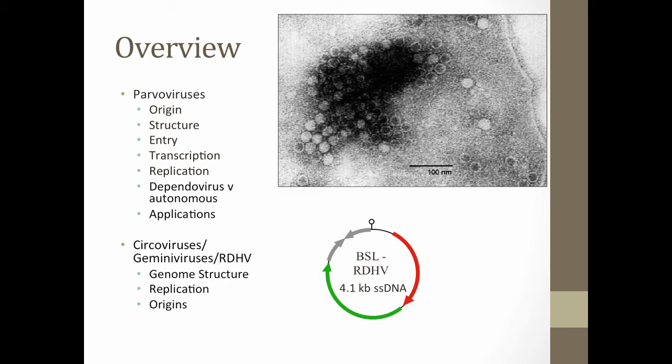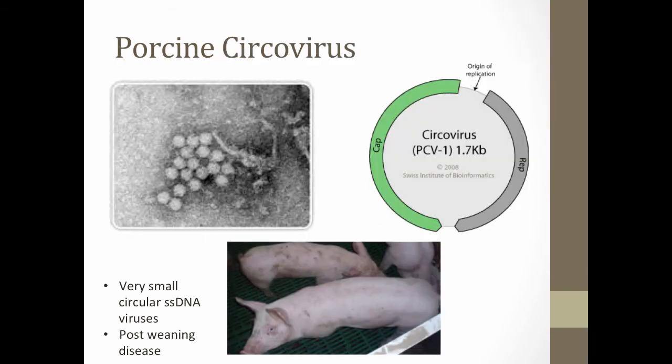Those are the small single-stranded linear DNA viruses of animals. Now we'll briefly talk about true circular small single-stranded DNA viruses — we'll focus on the circoviruses, which are viruses of animals. Circoviruses infect pigs, birds, and all kinds of animals. Circoviruses infect animals; gemini viruses infect plants — you won't be talking about gemini viruses in this course.